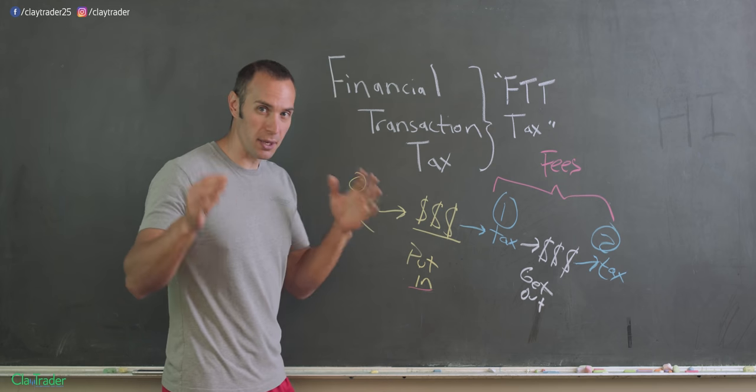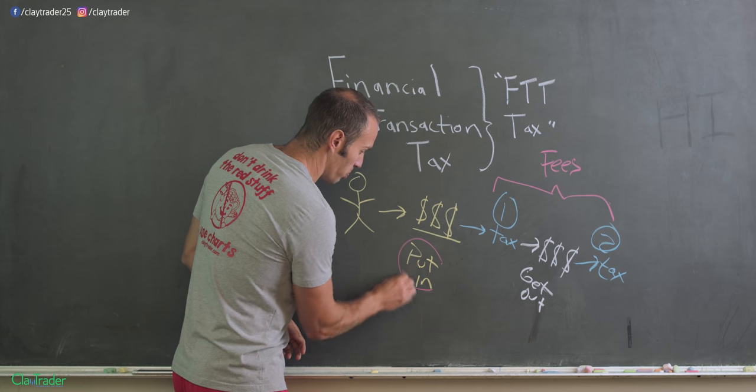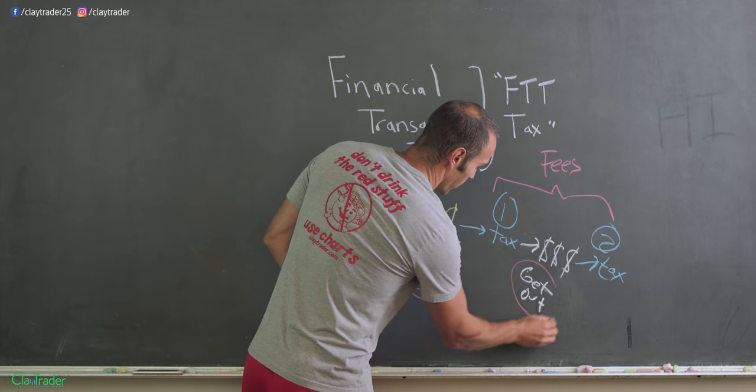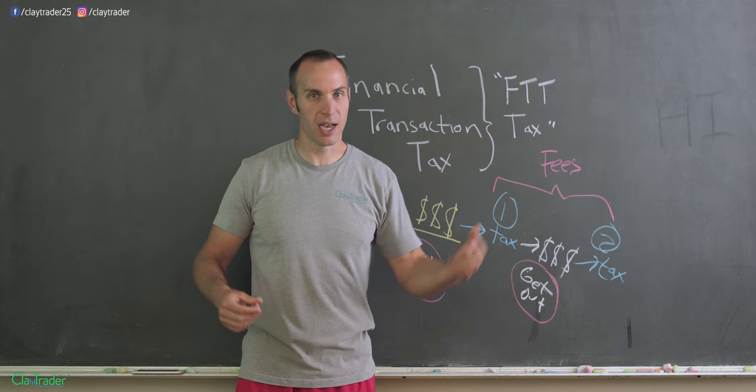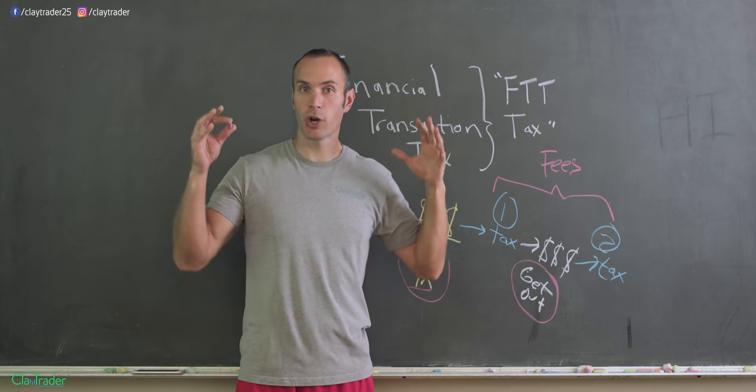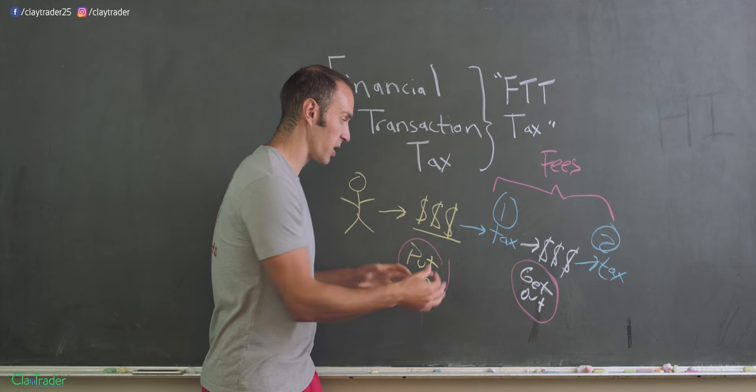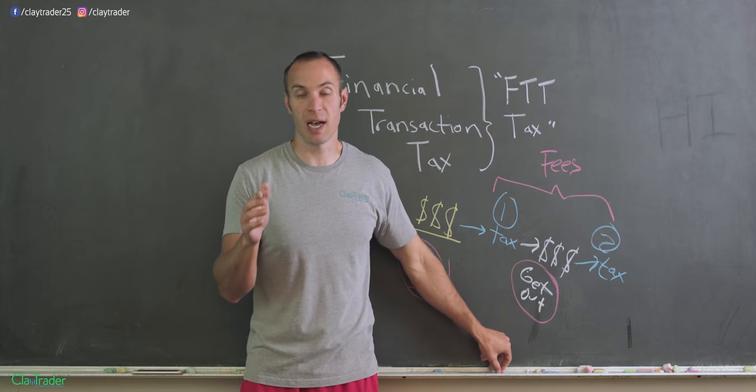So that is how it works. Again, the big thing is here, it's the money you put in and then the money you get out. It has nothing to do with, oh well, I made a profit of $1,000, so I only pay the tax on that $1,000. No, it's a transaction. And whatever the transaction is, whatever those dollar amounts are, that is what you will be taxed on.